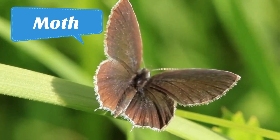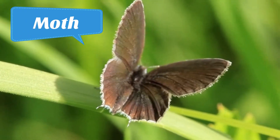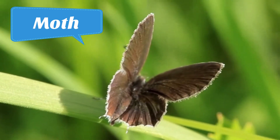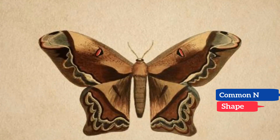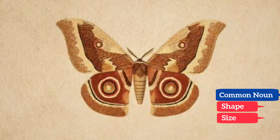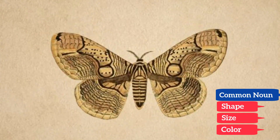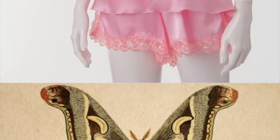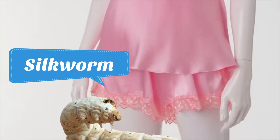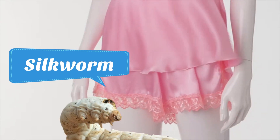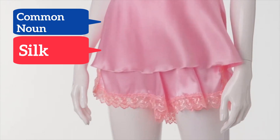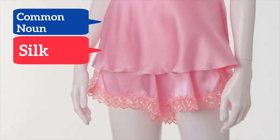A close relative of the butterfly is the moth. As we can see from our video clip, moths can come in lots of different shapes, sizes, and colours — and these words are all common nouns. Did you know that the larva form of a moth is called the silkworm? And the silkworm is responsible for the production of the fabric called silk.